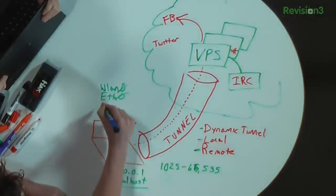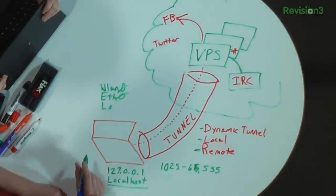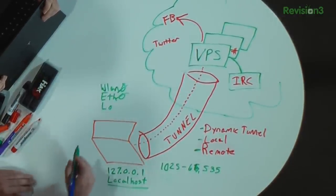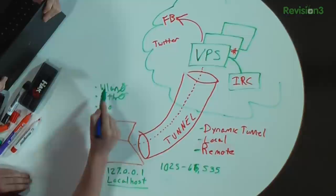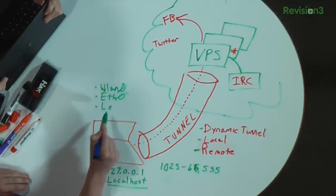You'll also have LO on Linux - or on Windows I forget what it's called - but basically these three interfaces: your Wi-Fi, your Ethernet, and your local. And that local here is that 127.0.0.1 address.